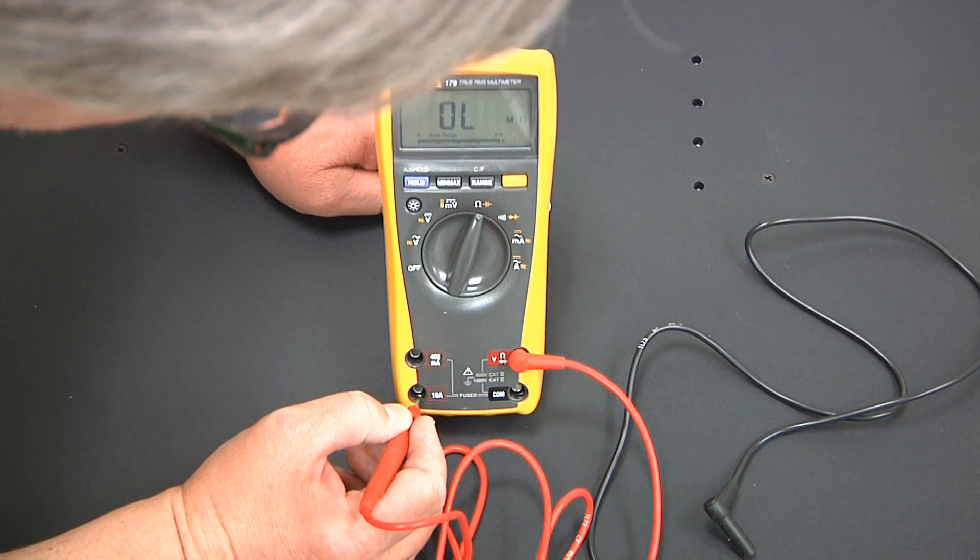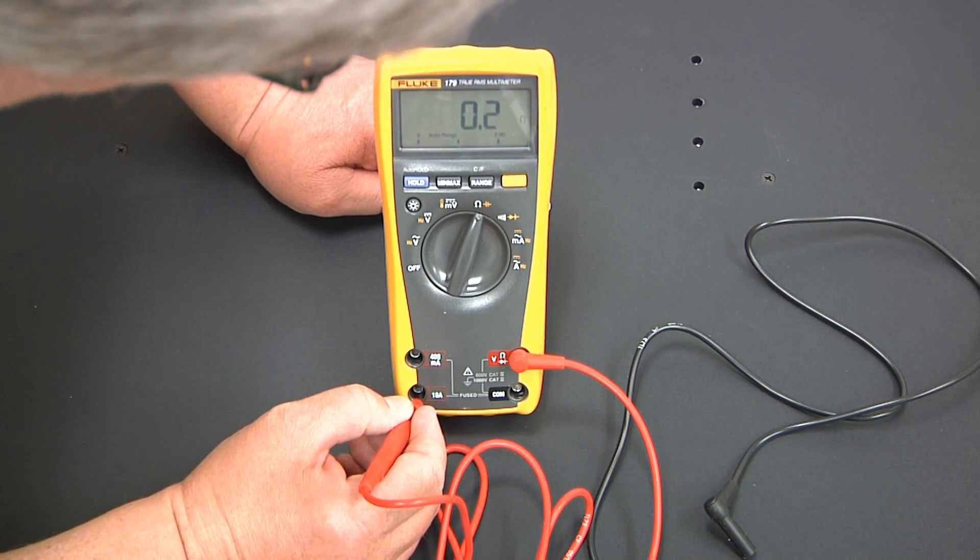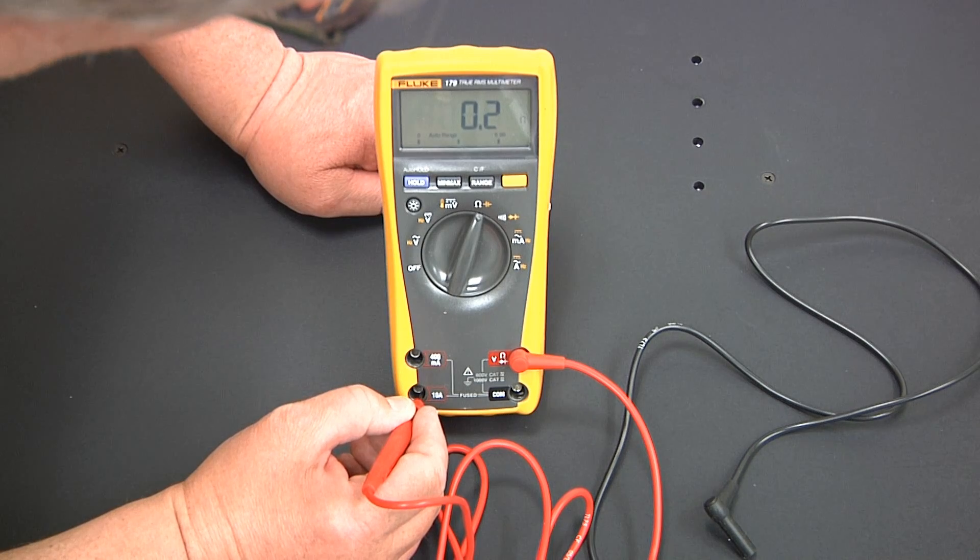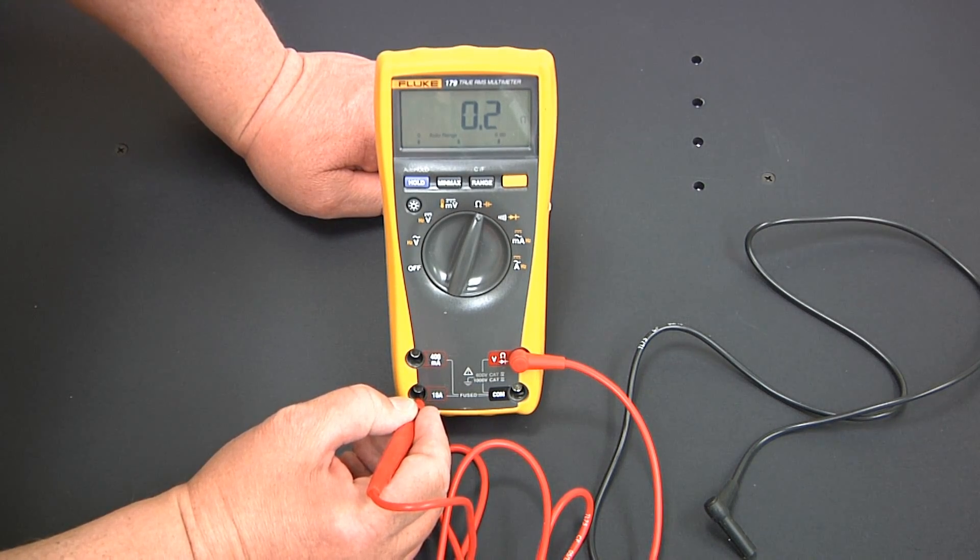Then touch the red probe to the 10 amp port. You should get a reading of 1 ohm or less. If you get these readings, then the digital multimeter fuses are not blown and it is ready to measure current.